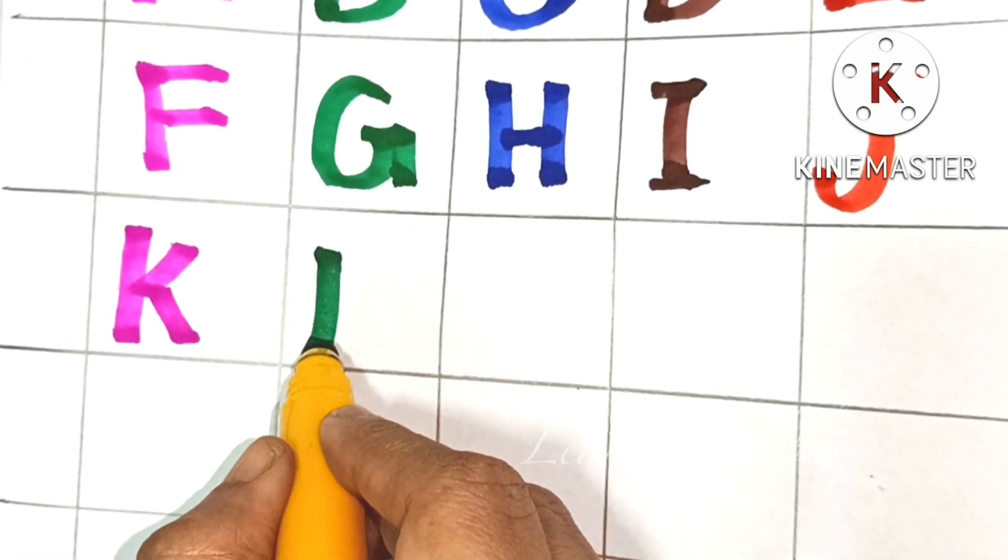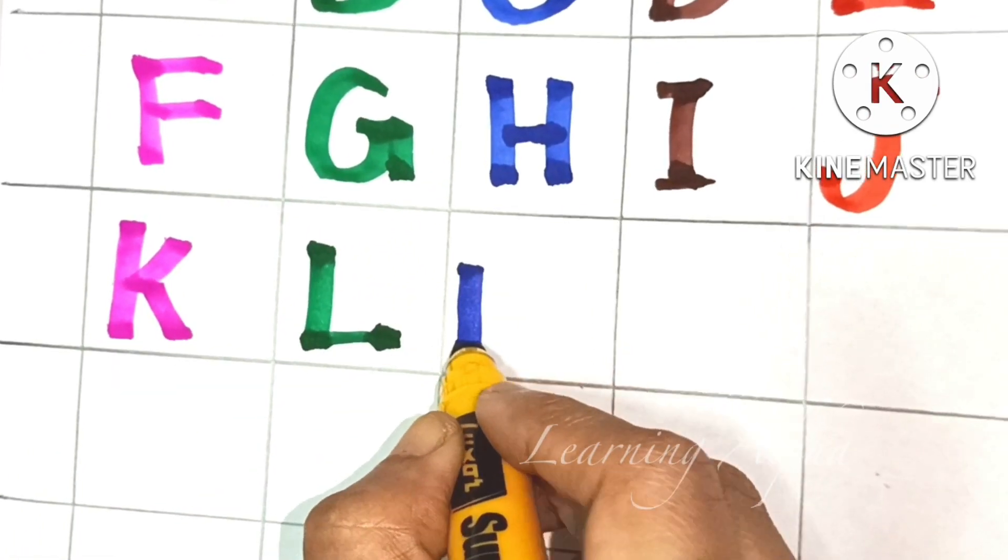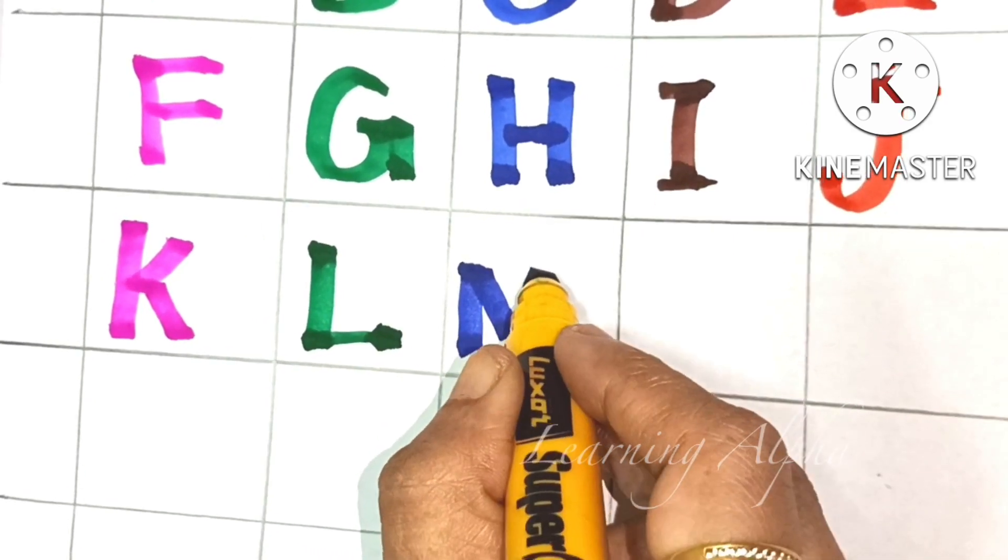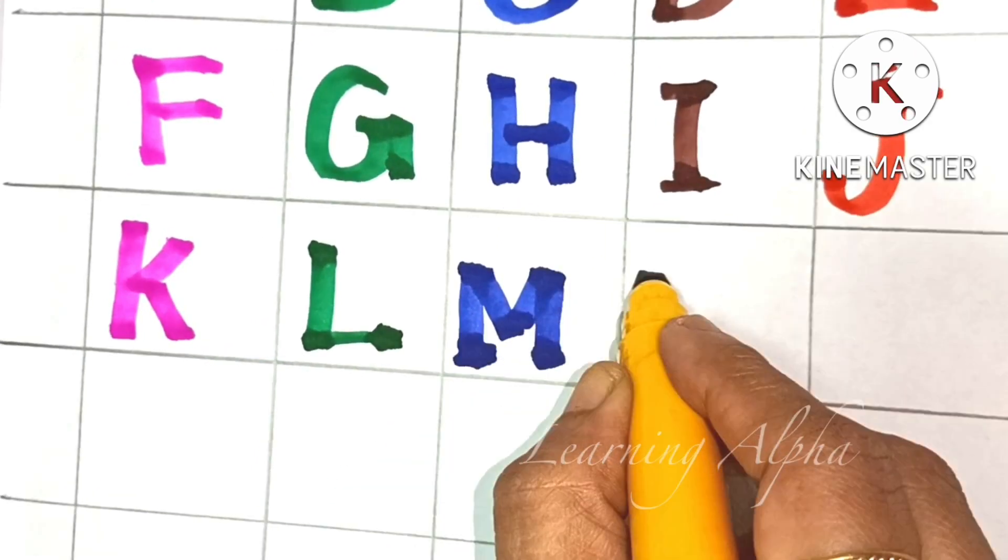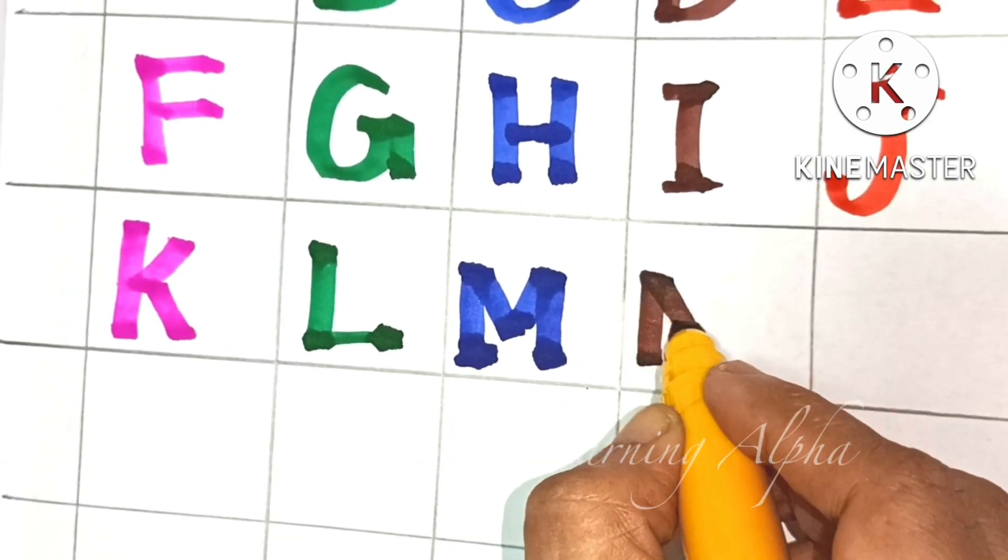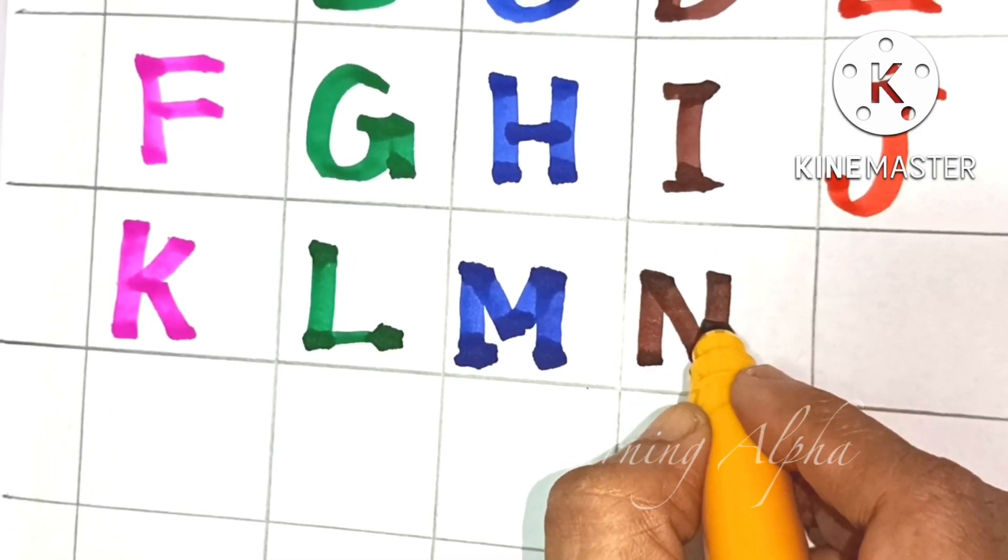L. L for Lion. M. M for Mango. N. N for Number.